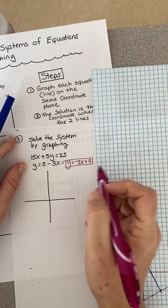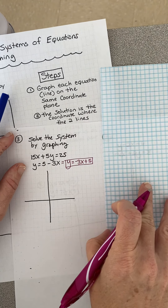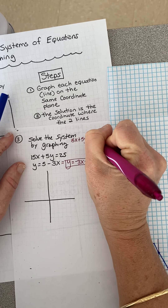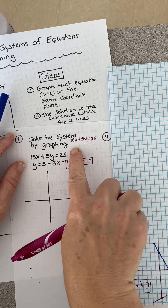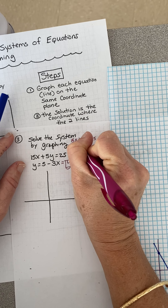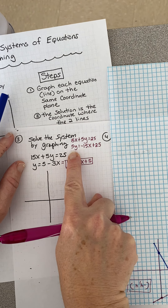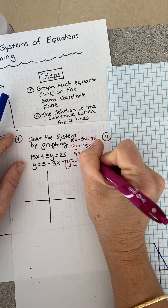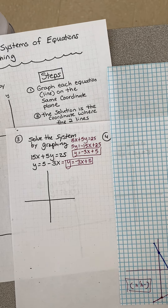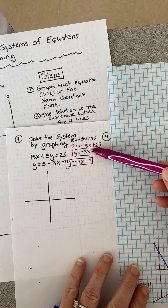For the first line in standard form, finding the intercepts doesn't give nice pretty numbers - 25 divided by 15 doesn't work out cleanly - so I'll convert it to slope-intercept form. Starting with 15x plus 5y equals 25, I subtract 15x from both sides to get 5y equals negative 15x plus 25, then divide both sides by 5. Now you might notice something - these two lines are the same thing.